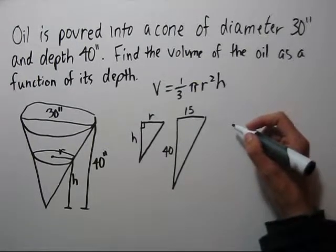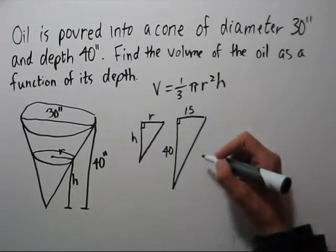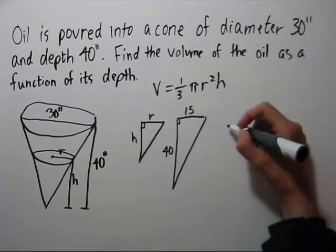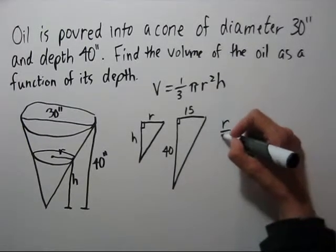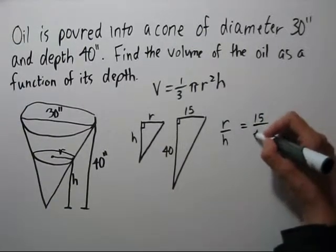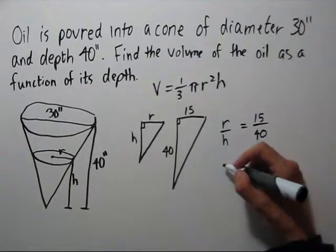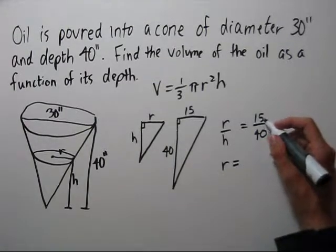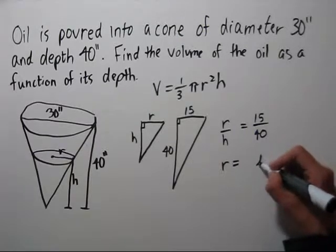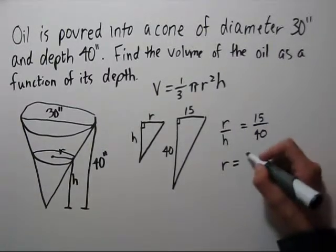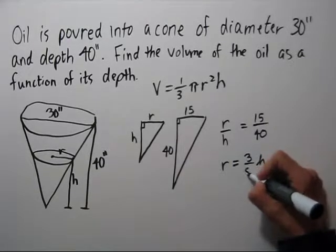So similar triangles says that if we have triangles with the same angles, then the ratios of their sides are equal. So r over h equals 15 over 40. Let's solve for r. So we're going to have 15 over 40 times h, but 15 over 40, 5 goes into both of those, so we can reduce this to 3 eighths.